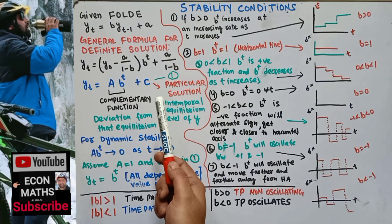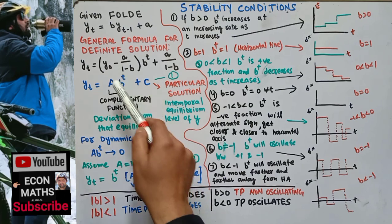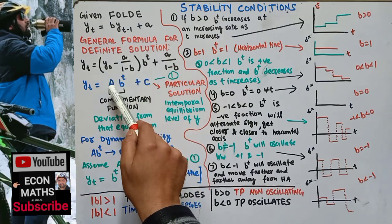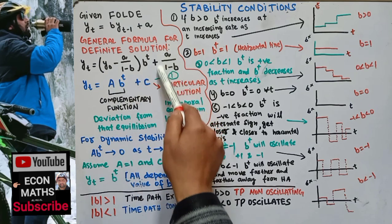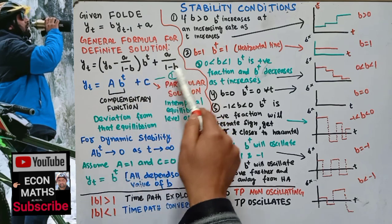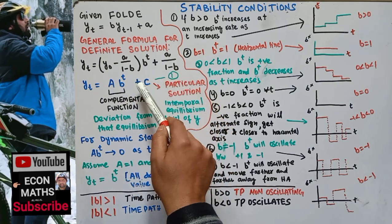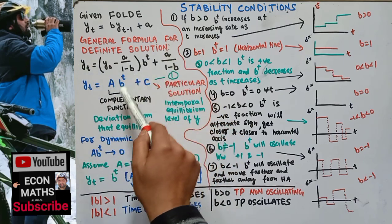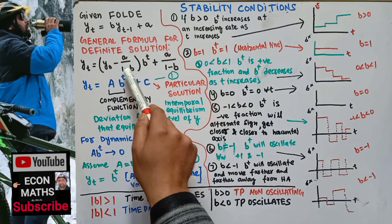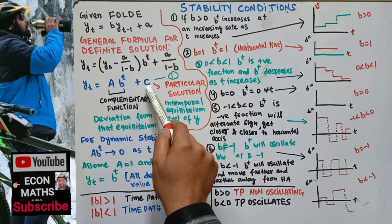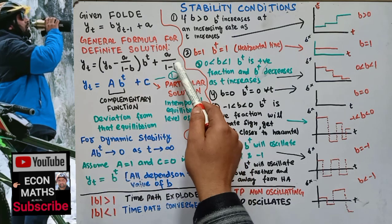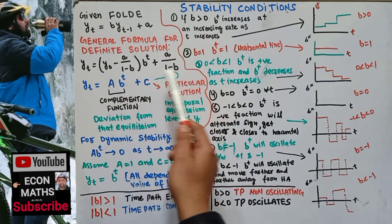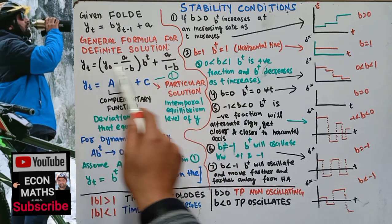If no initial condition is given, we can write the term in parentheses simply as a constant A, so the equation reduces to: y_t equals A·b^t plus c. We are taking the case when b is not equal to 0.